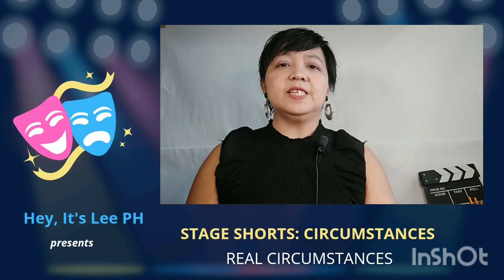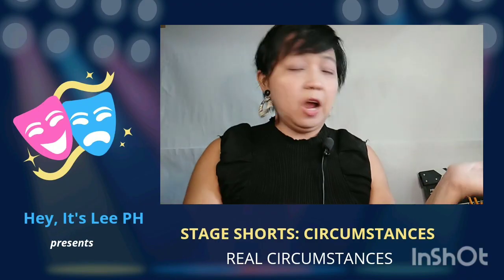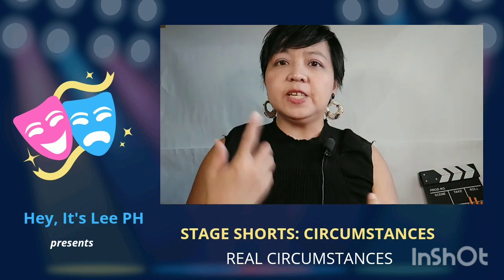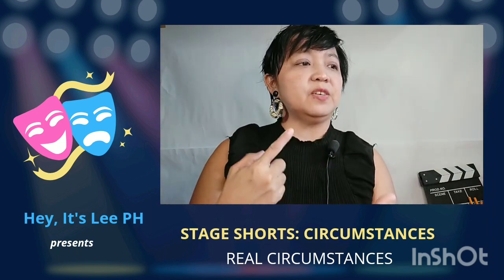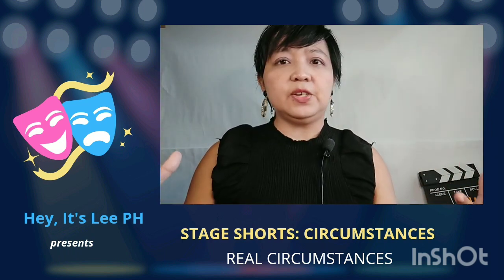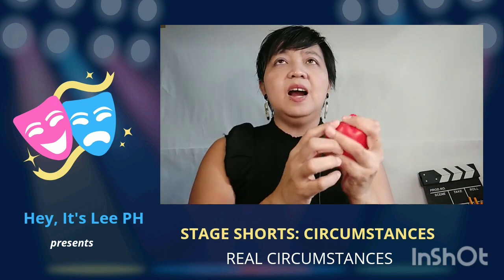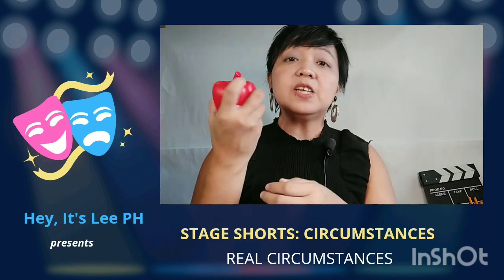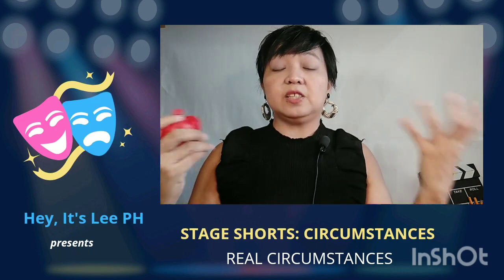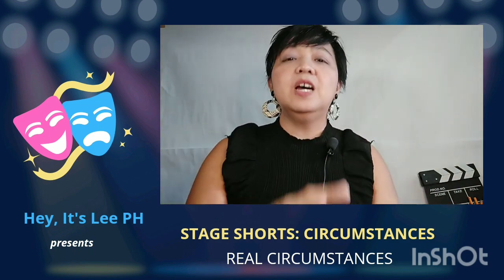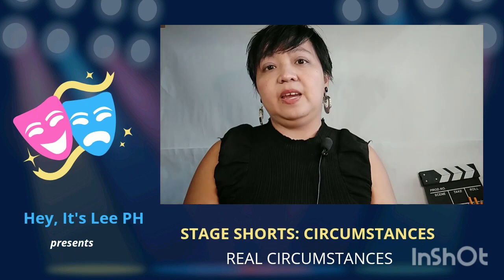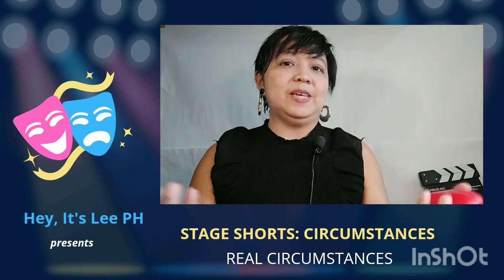When it comes to real circumstances — real meaning what you can actually see, reality — it's about using your five senses: smell, sight, hearing, taste, and touch. It's very sensory. For example, this apple here is a real prop, so that is a real circumstance. The things behind me are real things I can see and use. Basically, real circumstances are the things on stage, whether props or sets, and the people as well.